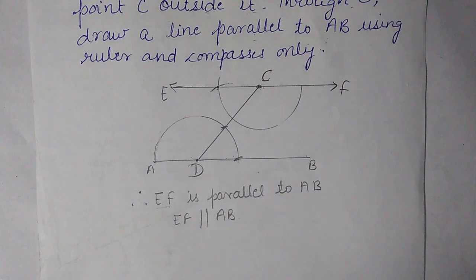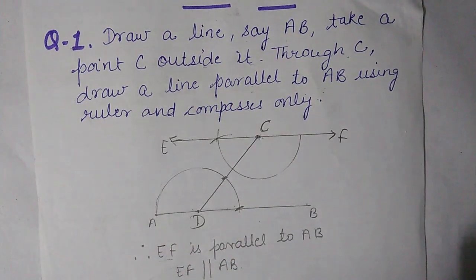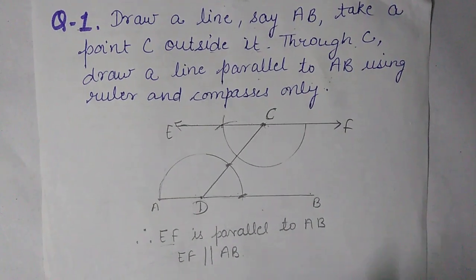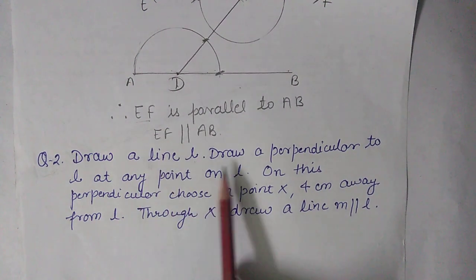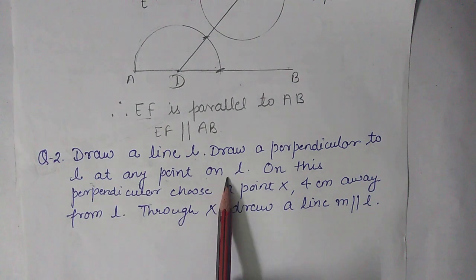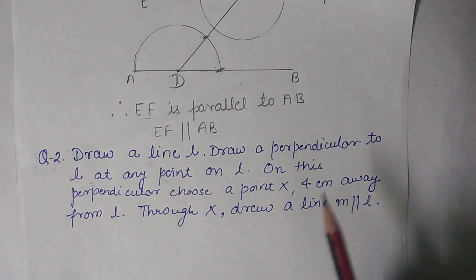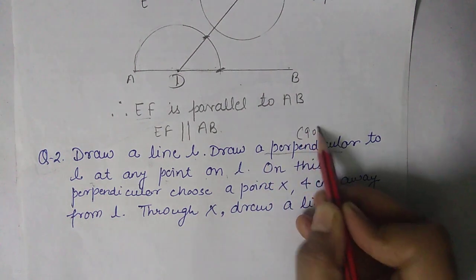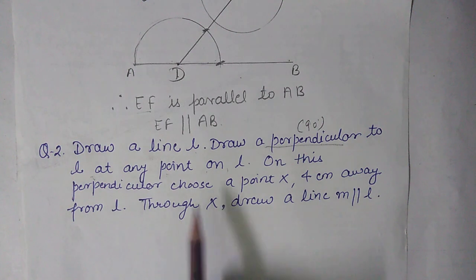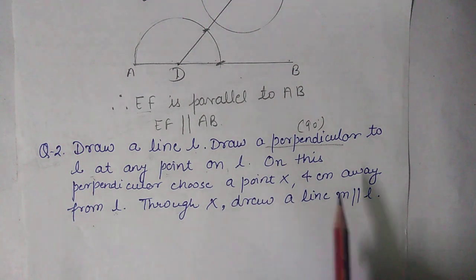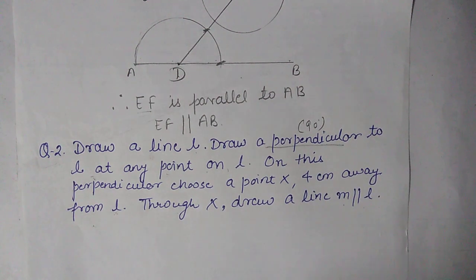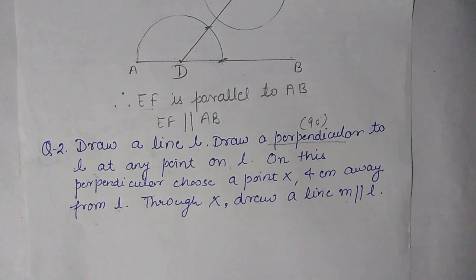Now come to question number two. Draw a line L, draw a perpendicular to L at any point on L — perpendicular means 90 degrees. Then on this perpendicular choose a point X that is 4 centimeters away from L. Then through X draw a line M parallel to L — same concept of drawing a line parallel to a given line.